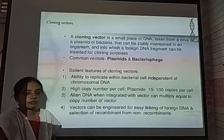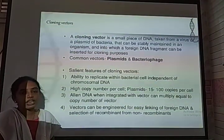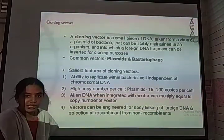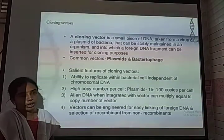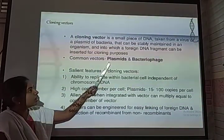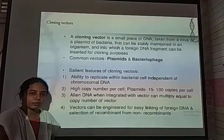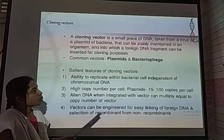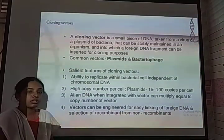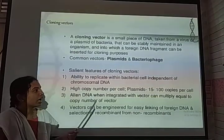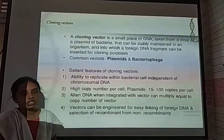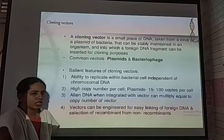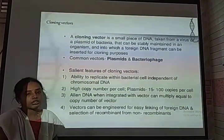Cloning vectors are vehicles helpful for transforming the desired genes into the host and for multiplication. The commonly used vectors in biotechnology are plasmids, bacteriophages, cosmids, and lambda phages. Plasmids can be extracted from bacteria and also synthesized artificially in laboratory conditions. An artificial plasmid extensively used in genetic engineering is called pBR322.